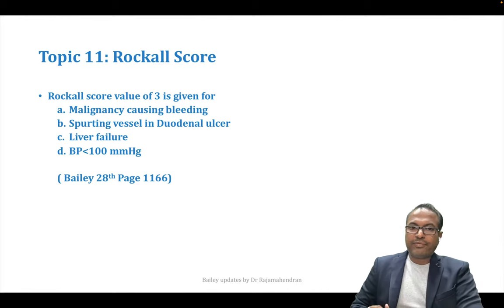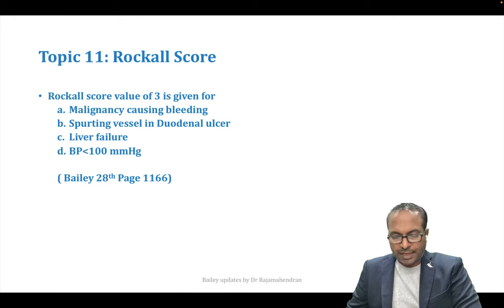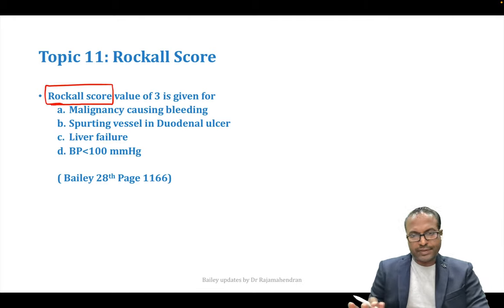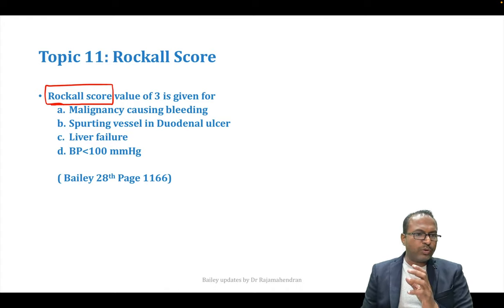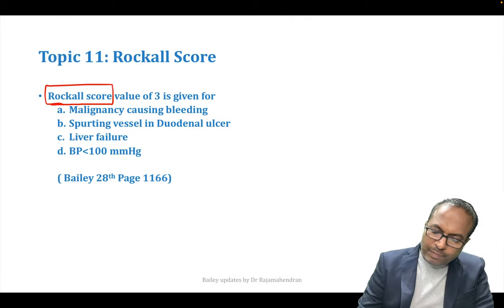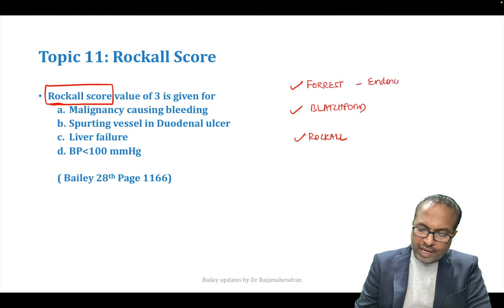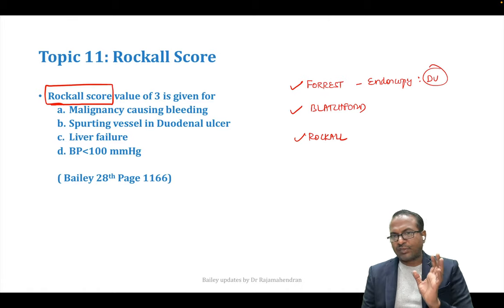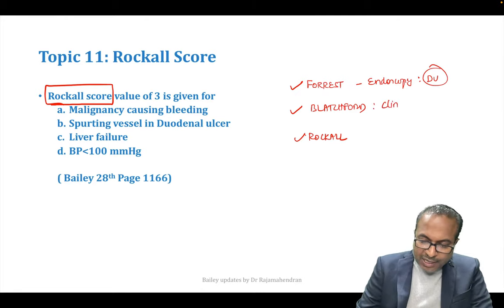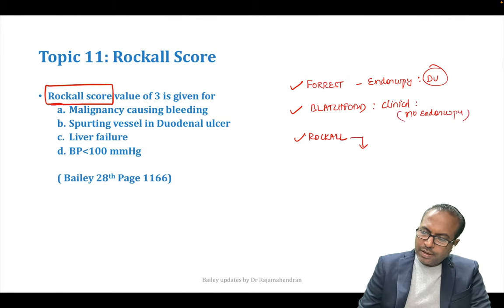Rockall score — new update for PG aspirants. Rockall score is used for upper GI bleed. Scores available for upper GI bleed: Forest classification (endoscopic, only for duodenal ulcer), Blatchford score (clinical only, no endoscopy), and Rockall score (clinical plus endoscopy — most important and sensitive). Rockall includes: malignancy, spurting vessel, liver failure, BP less than 100.